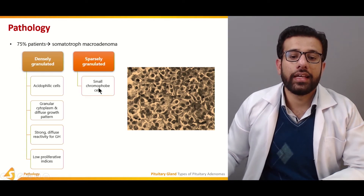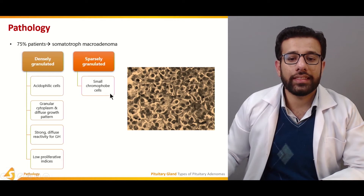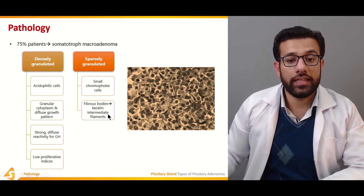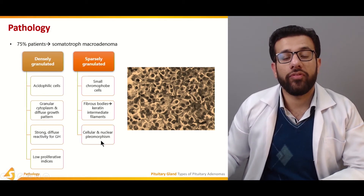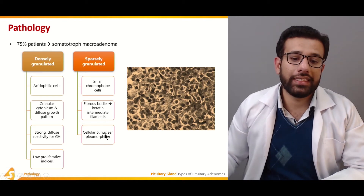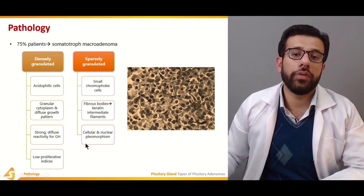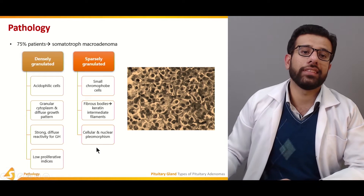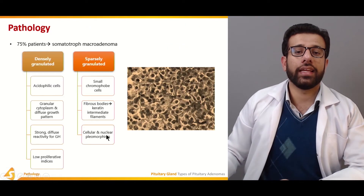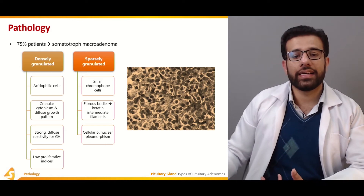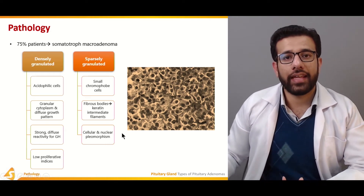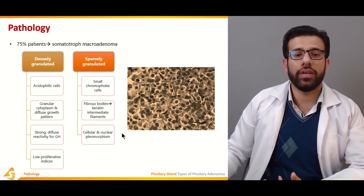The sparsely granulated somatotroph adenoma contains small chromophobe cells. Fibrous bodies and keratin intermediate filaments can be seen. Cellular and nuclear pleomorphism is also present, which is important in diagnosis and in differentiating it from other cell types specific to the macroadenoma.